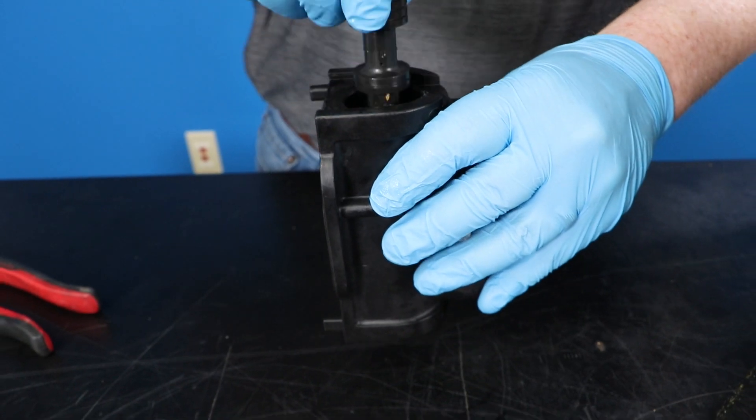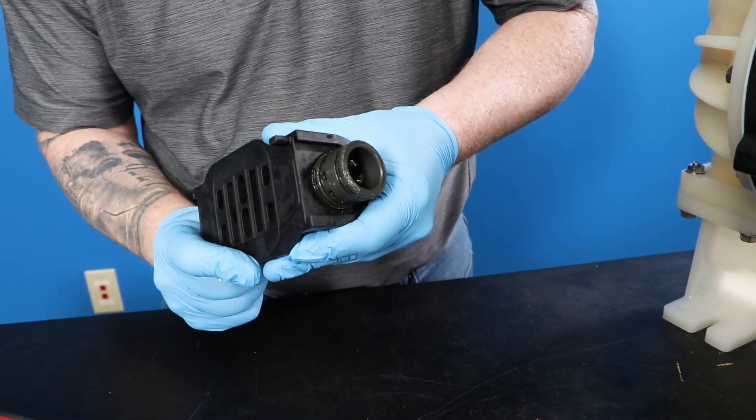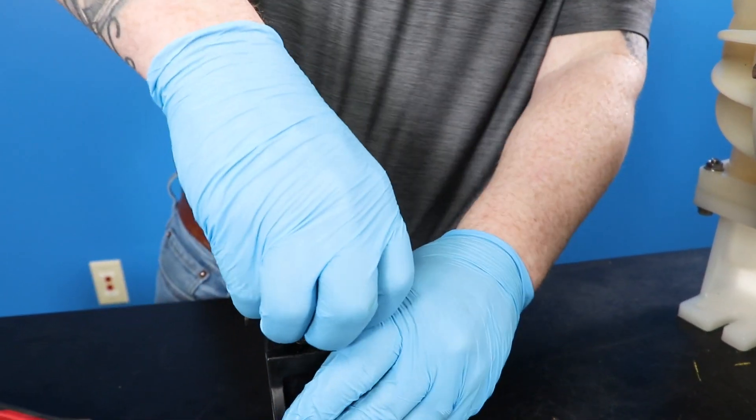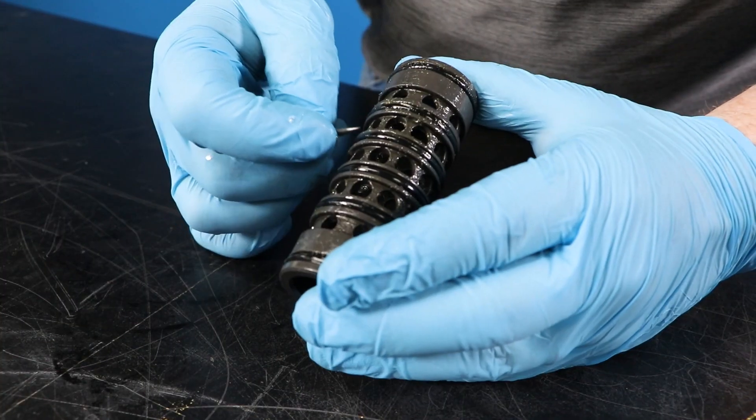Next, remove the sleeve and spool from the valve body and replace the o-rings using the small pick.